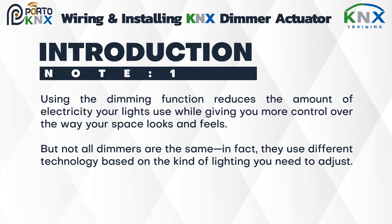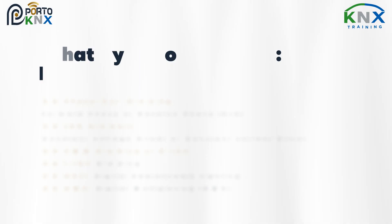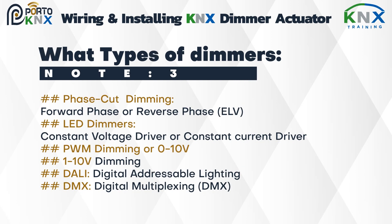What types of lamps are there? There are many types: incandescent lamps, halogen lamps, low-voltage halogen lamps with wound transformers, low-voltage halogen lamps with electronic transformers, compact fluorescent lamps in RC mode, compact fluorescent lamps in RL mode, LED energy-saving lamps in RC mode, LED lamps in RC mode, and LED lamps in RL mode.